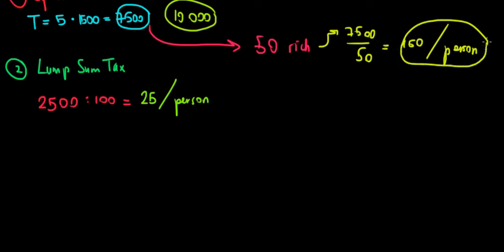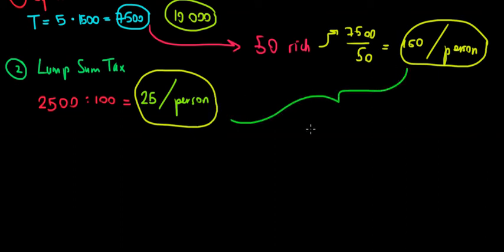150 euros per person from the opera ticket, 25 euros per person from the lump sum ticket. With this together, a rich person is taxed 150 plus 25 which is 175 euros.